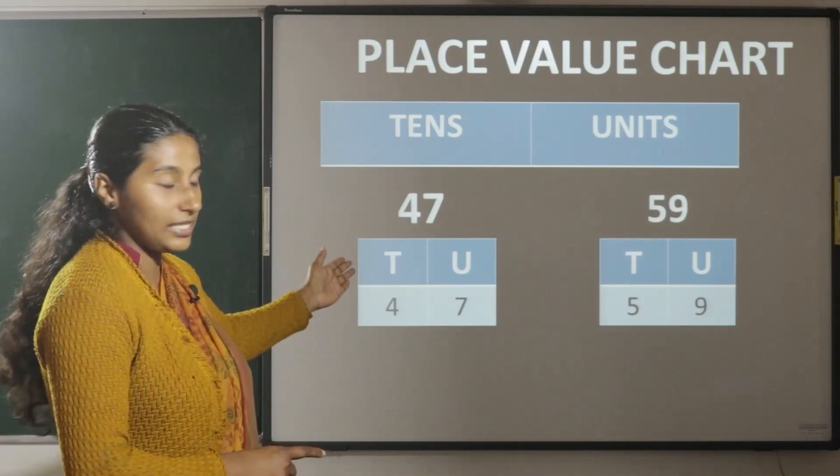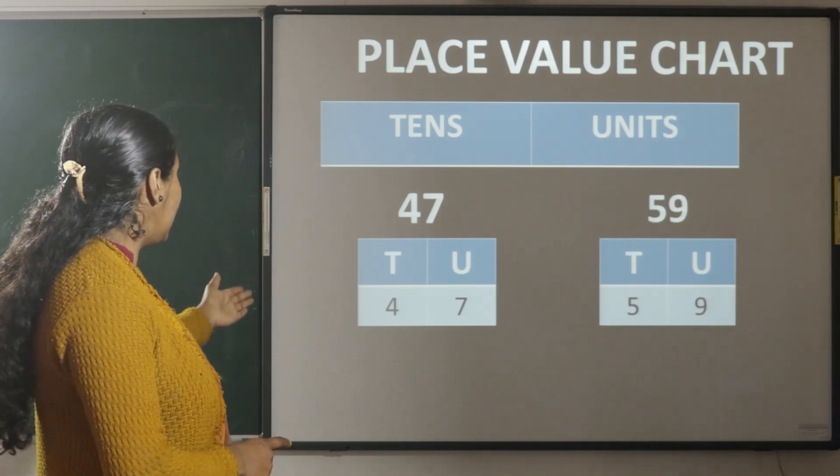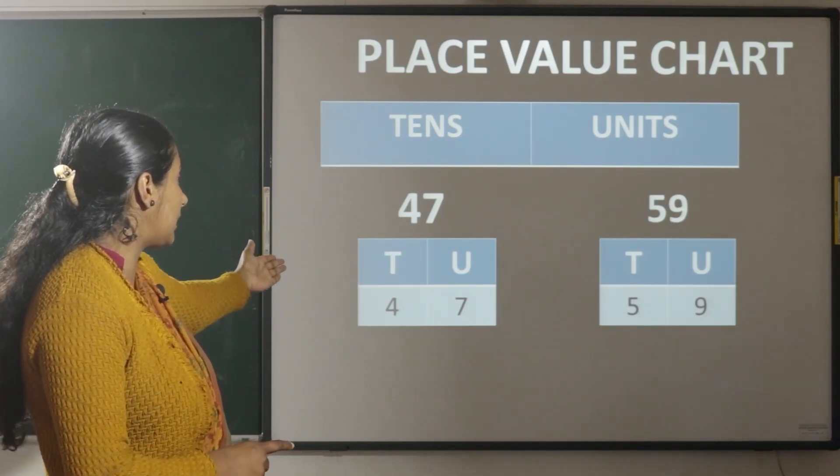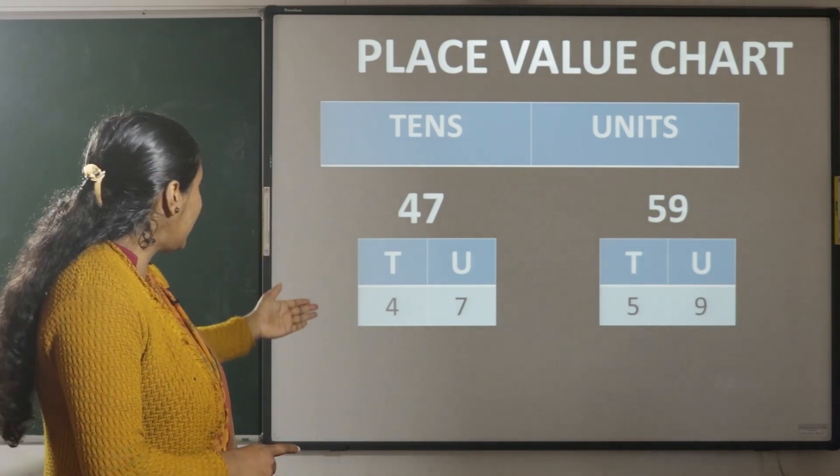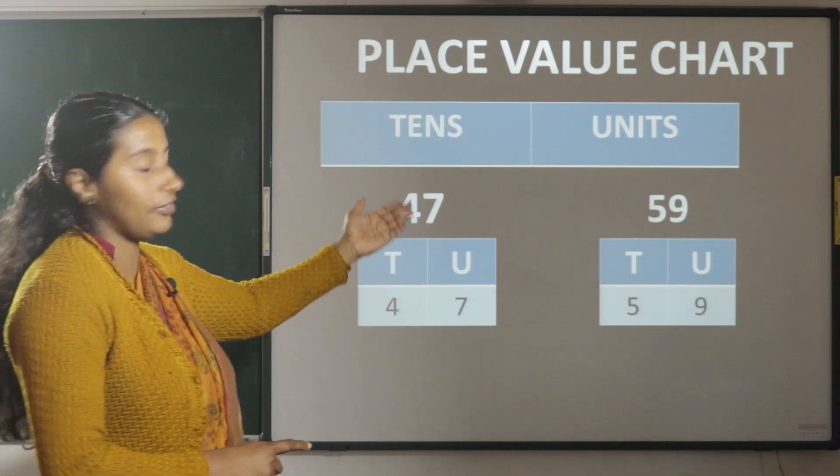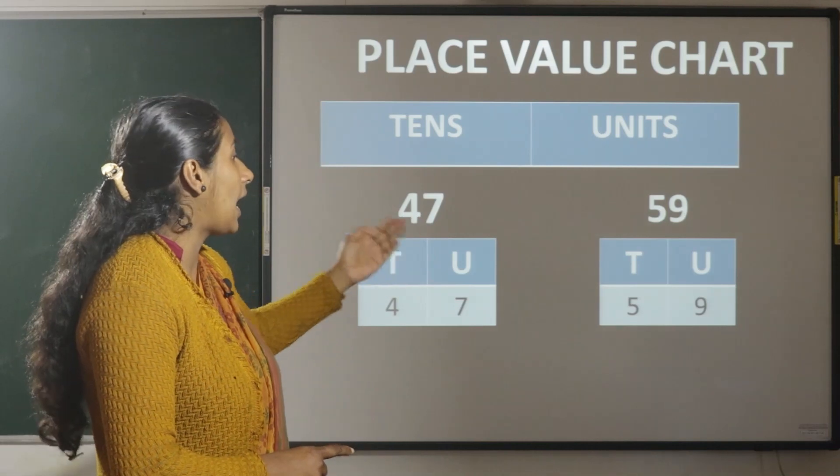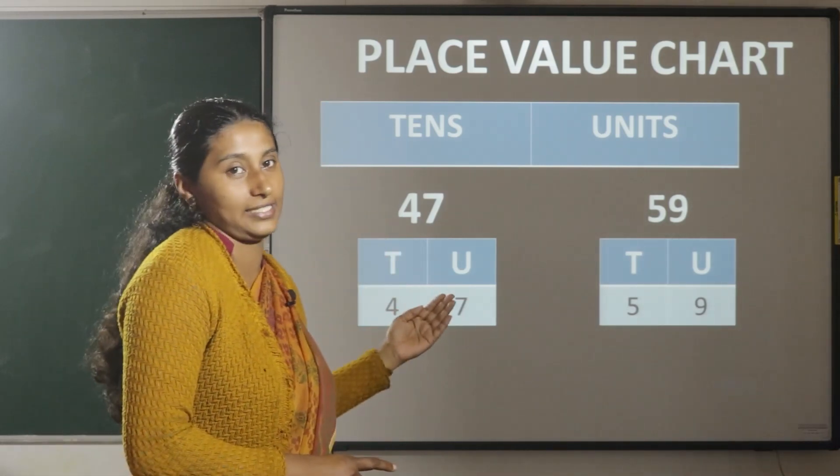Here, the number 47. 7 is in unit place and 4 is in tens place. So, there are 7 units and 4 tens. Like 59, there are 9 units and 5 tens.